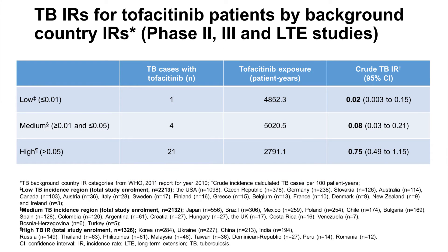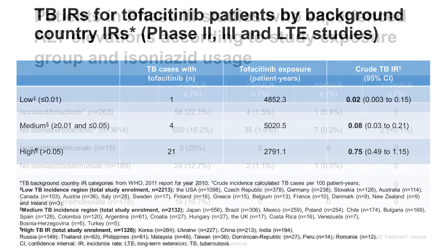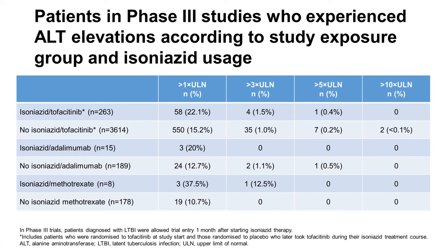With regard to TB, 21 of 26 cases occurred in countries with high background TB prevalence. As you can see from the table on this slide, the TB rate varied closely according to regional background TB risk. In total, 286 patients were reported to have untreated latent TB infection upon screening. All of these patients completed 1 month of isoniazid prior to entry to the trial and all completed a 9-month course of isoniazid during the trial. Importantly, none of these patients developed TB.